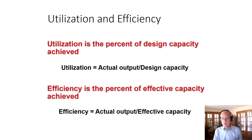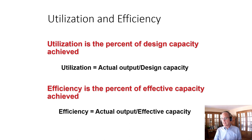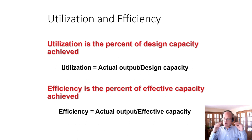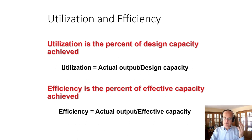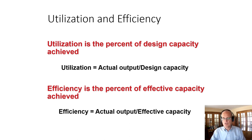Just like with utilization in queuing models, you don't always want to be at 100%. Sometimes you want some buffer capacity in case demand surges. It depends on your value proposition. If you are low cost, you want utilization to be as high as you can. If you have surges in demand and a high value proposition, you want to be able to respond to demand as it comes in. All else being equal, higher utilization is better, but sometimes we have strategic decisions where we accept lower utilization.